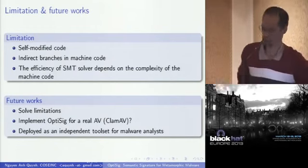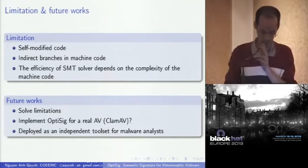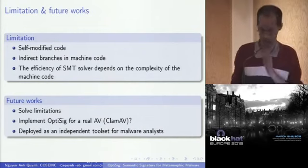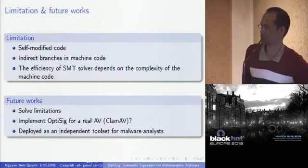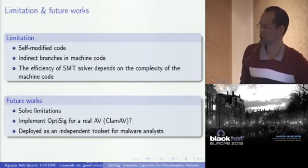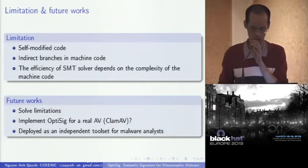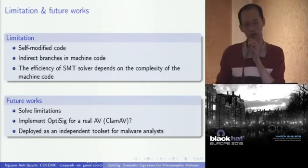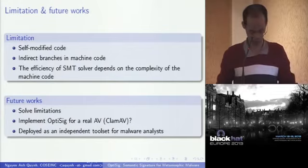Future work: we try to solve the limitations somehow. If we have time, we can try to implement OPTISIG for a real AV — for example ClamAV, which is open source. We will also deploy OPTISIG as an independent toolset for malware analyst people, so they can benefit from this tool.